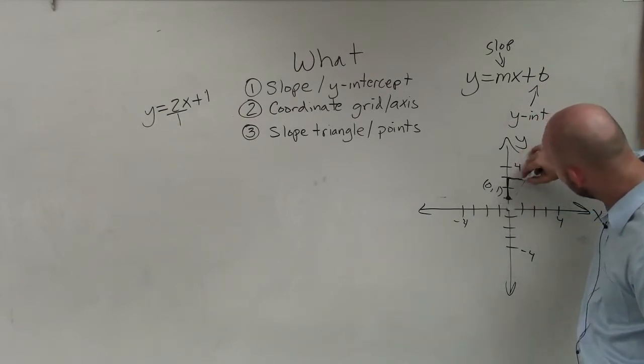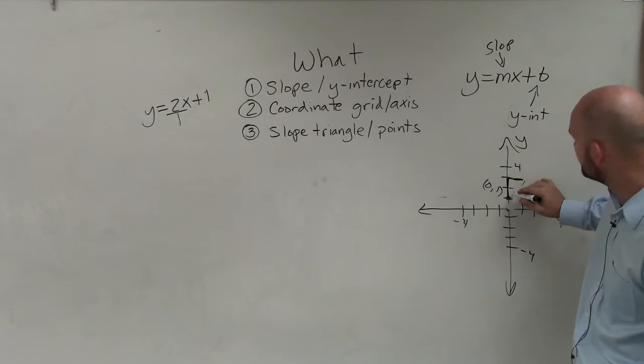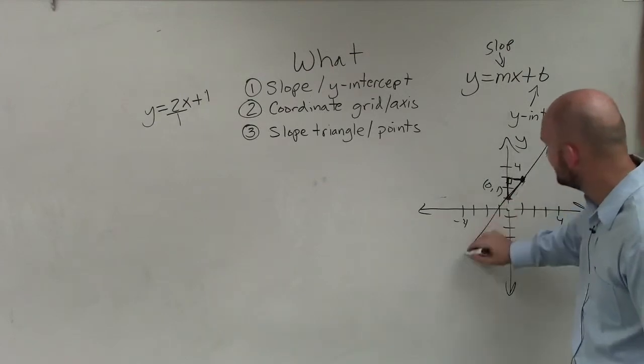Then go over 1, since the x is positive. Therefore, by creating my slope triangle, which is always going to be a right angle, I can now create my line.